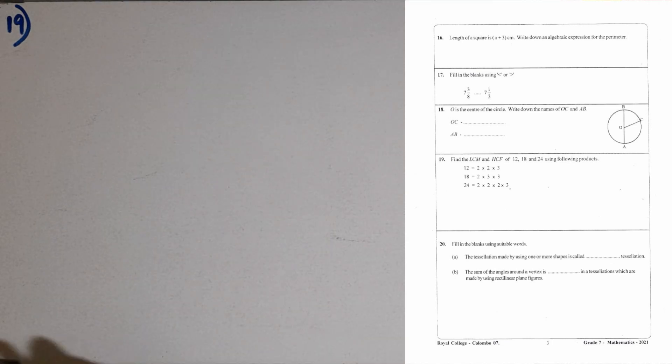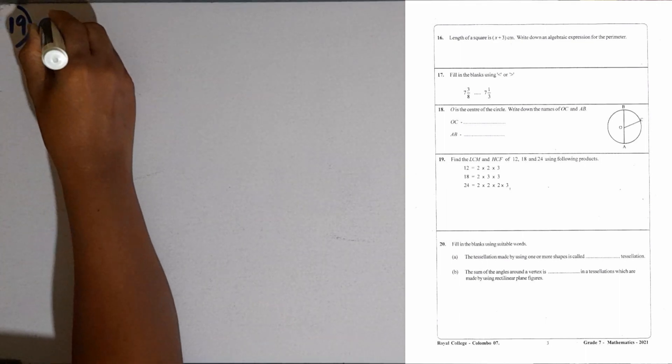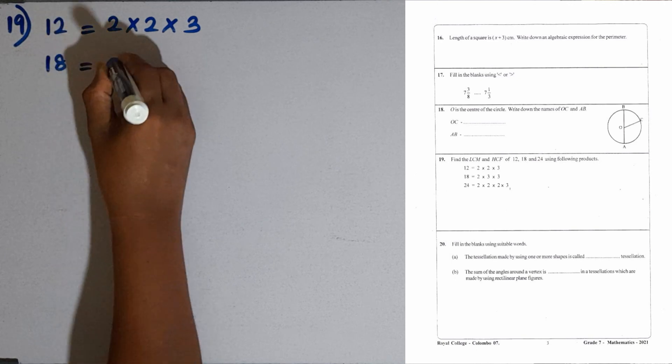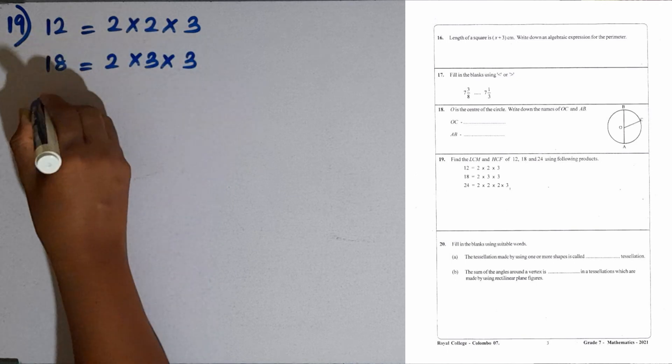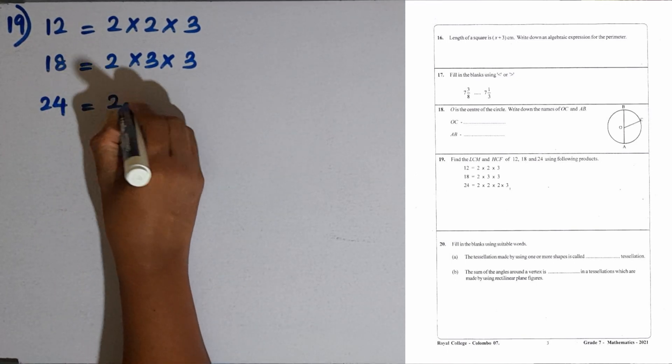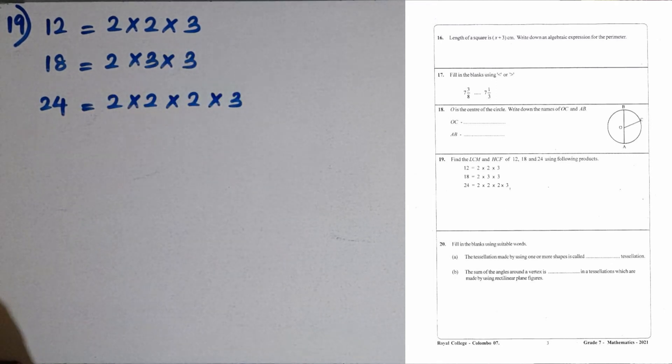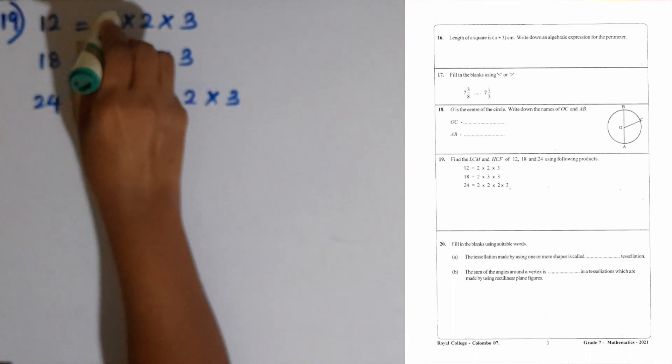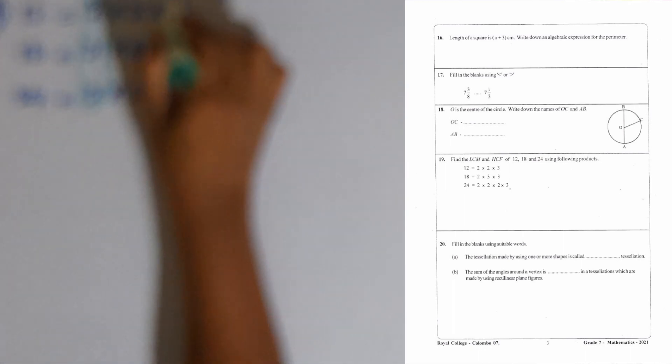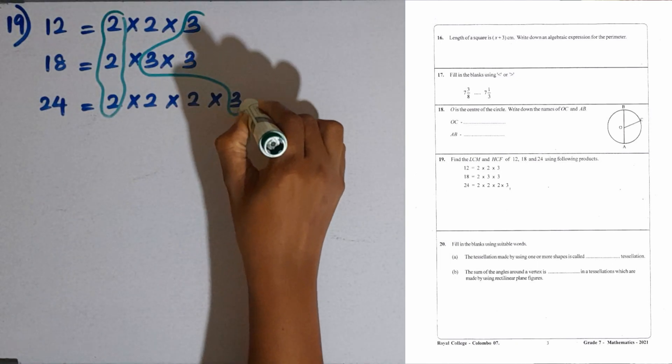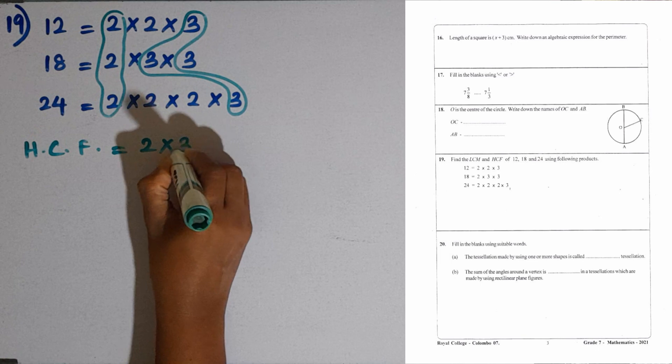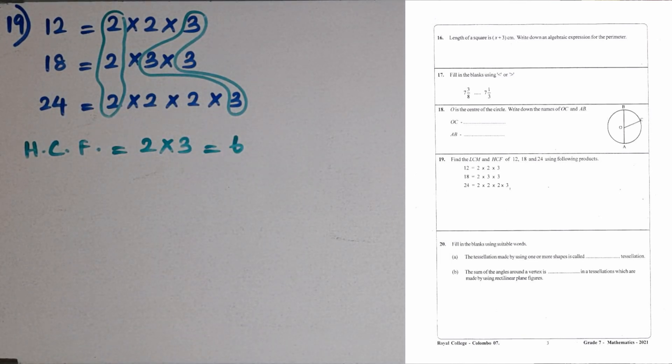Question number 19. Find the LCM and HCF of 12, 18 and 24 using the following products. 12 is written as 2 multiplying by 2 multiplying by 3. Then 18 equal to 2 multiplying by 3 multiplying by 3. 24 equal to 2 times 2 times 2 times 3. Then first we will find the HCF of these numbers. We can circle 2 here as a common factor. Then 3 also can be circled. Then HCF is equal to the multiple of 2 and 3, that is 6.